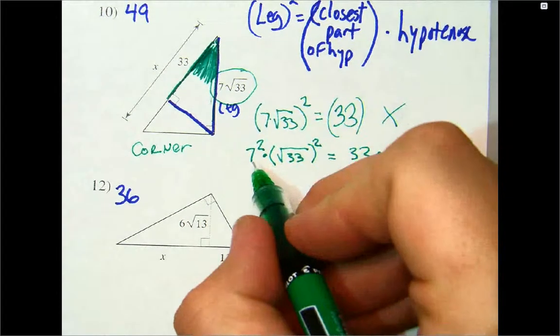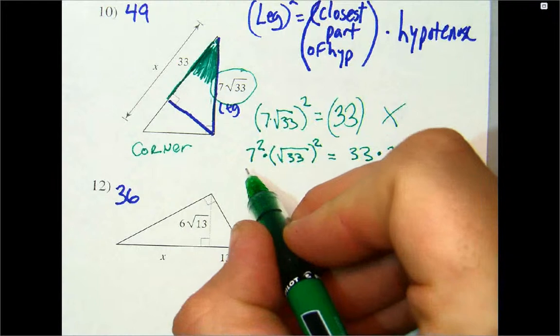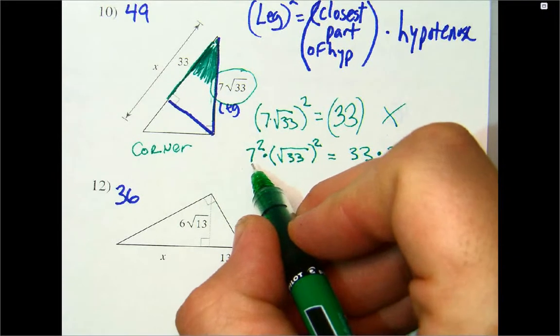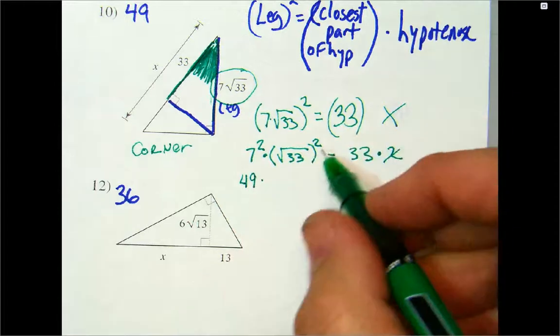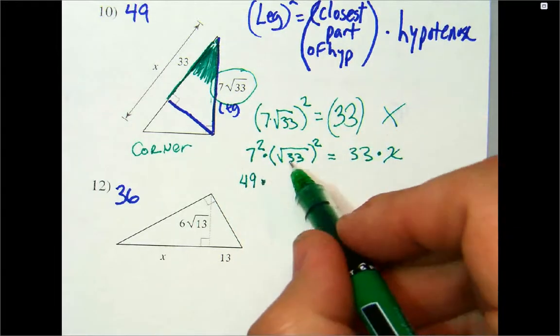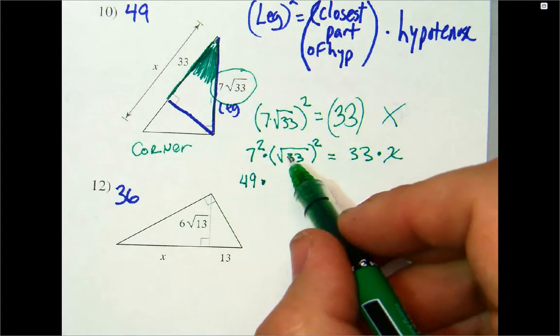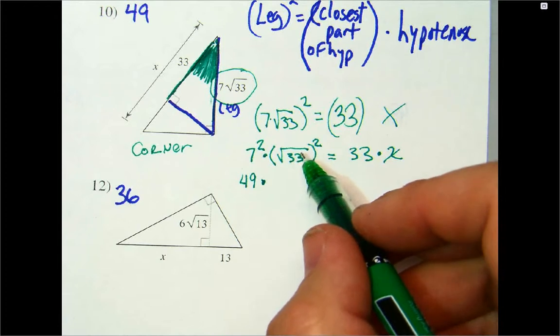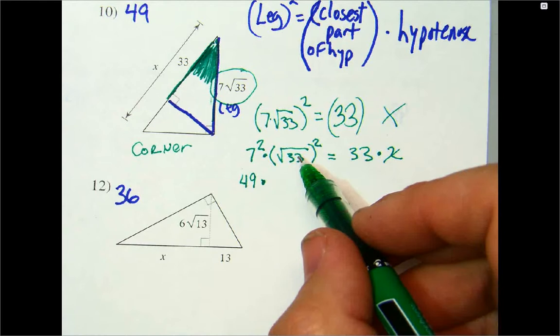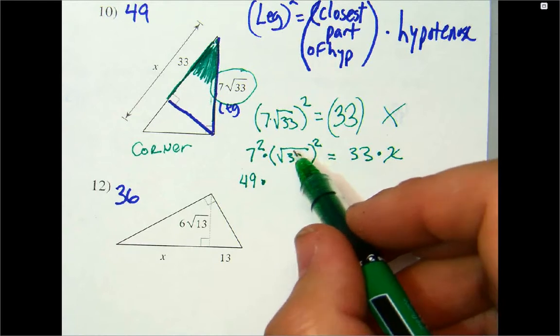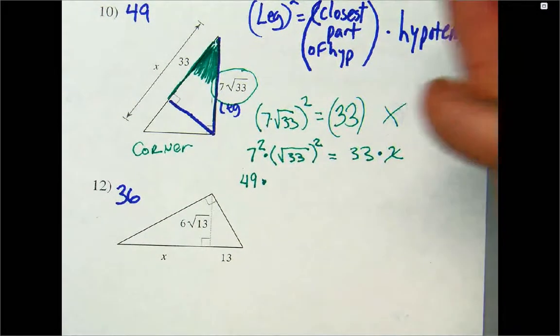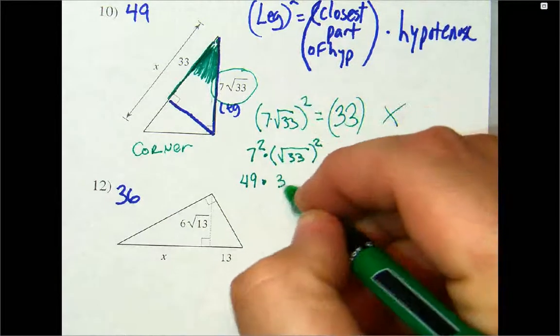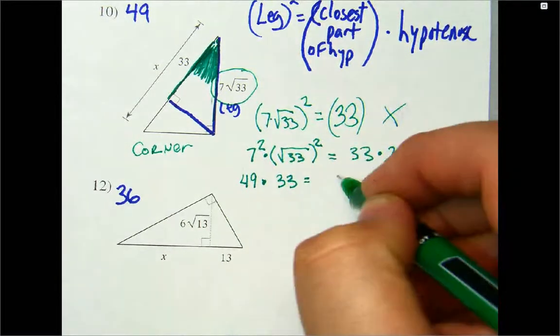Now, what's 7 squared? What's 7 times 7? 49. Times, now, the square root of 33 squared. What happens with the square root when you square it? Yeah, it just becomes 33. When you take a square root and you square it, it's like adding and subtracting. They undo each other. They're inverses of each other. So, this is times 33 is equal to 33 times X.